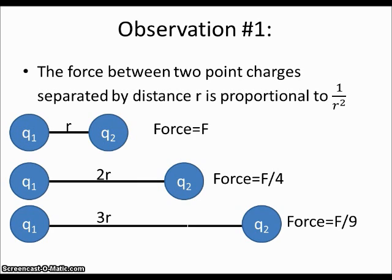The first observation was made by a scientist by the name of Joseph Priestley, who observed that the force between two point charges separated by some distance r is proportional to the inverse of the distance squared, or 1 over r squared.